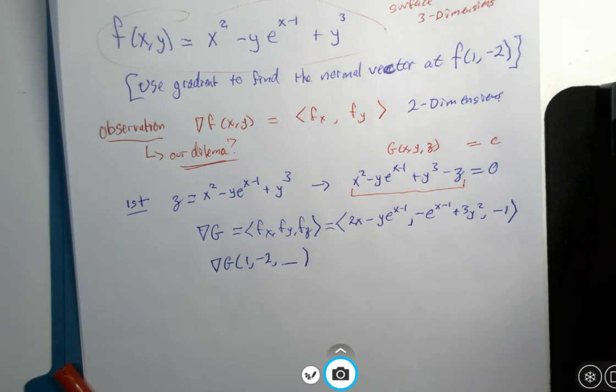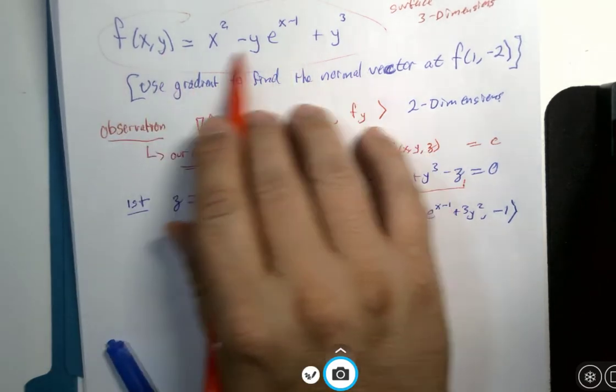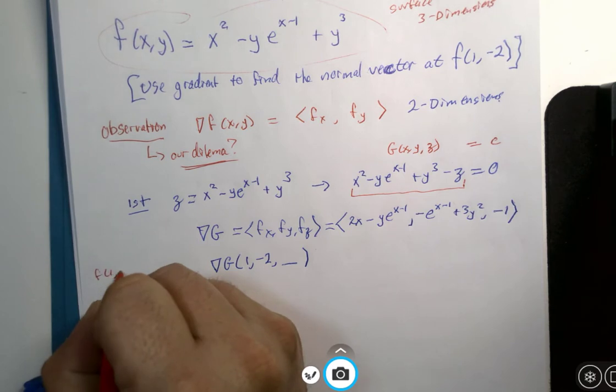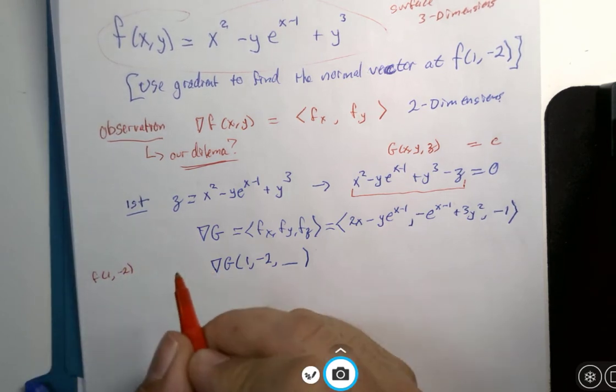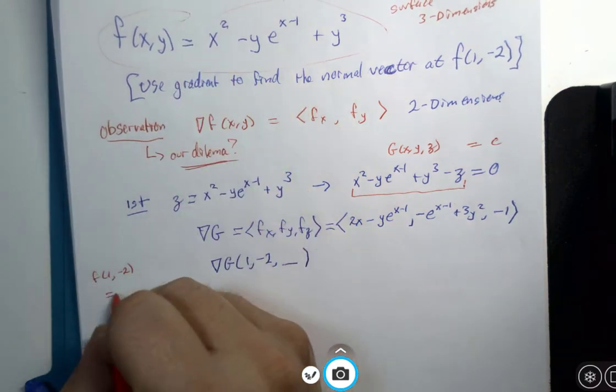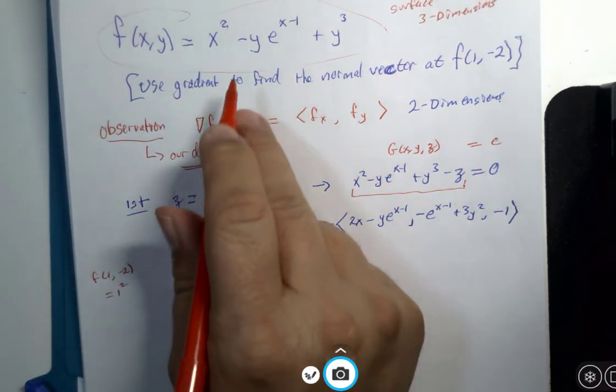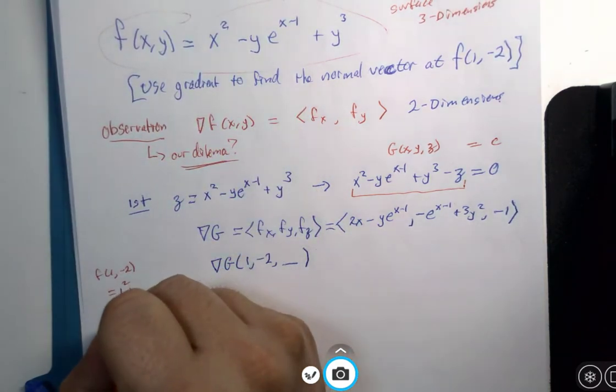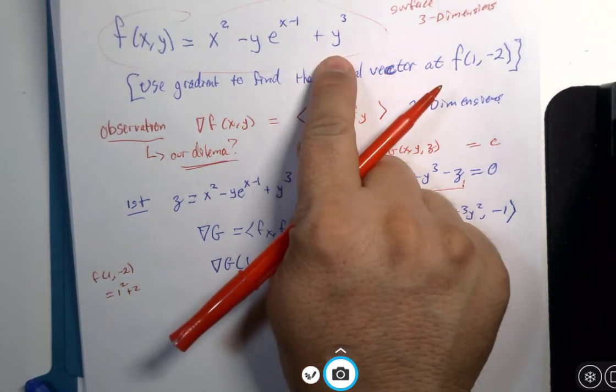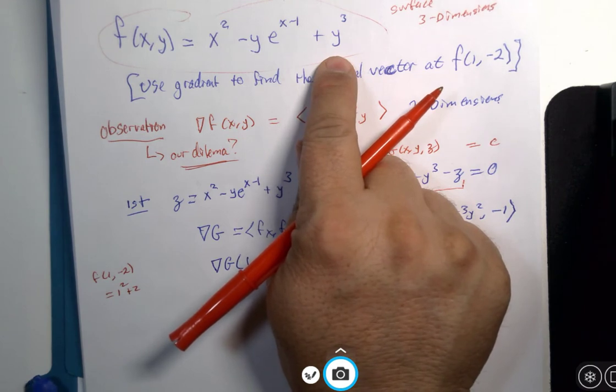Where do z values come from? Here. If I let x is 1 and y is negative 2, let's see, that's 1 squared minus a negative 2 is positive 2, 1 minus 1 is 0, e to the 0 is 1. And then, what do I get here,